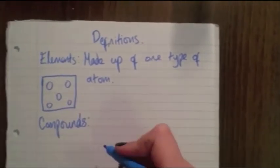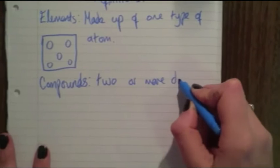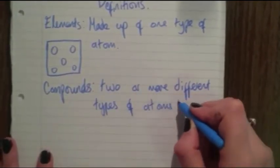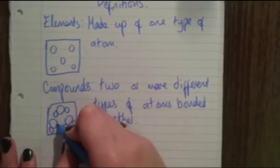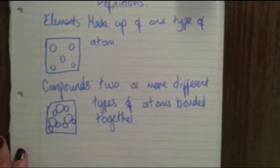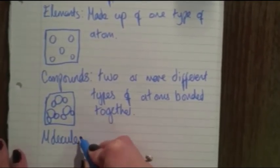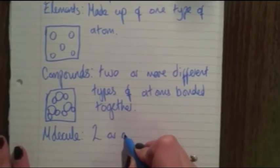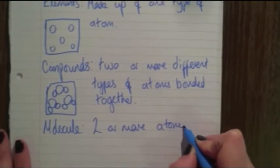The second definition is a compound. A compound is two or more different types of atom which are bonded together, meaning you will have two or more atoms joined together by a bond. You can see from the diagram that there are three atoms joined together — two small ones are the same and one large one is different. This is what a compound is: different atoms bonded together.